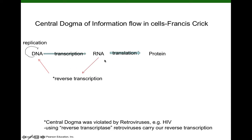Now, some viruses like to violate these rules. For example, retroviruses such as HIV. HIV has an RNA genome. When HIV gets into our cells, they'll use their RNA genome as a template to make a DNA copy. So this process is called reverse transcription, and the enzyme that carries out reverse transcription is called HIV reverse transcriptase. When we get to the next unit on viruses, we'll come back and talk a little bit about reverse transcription.